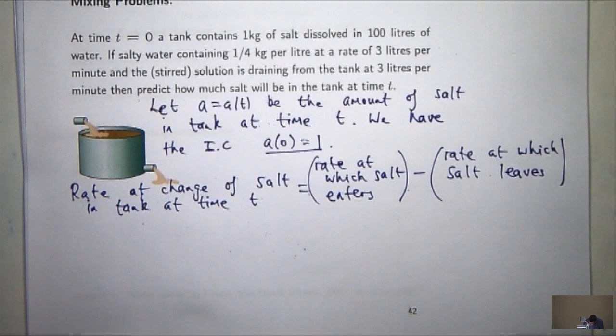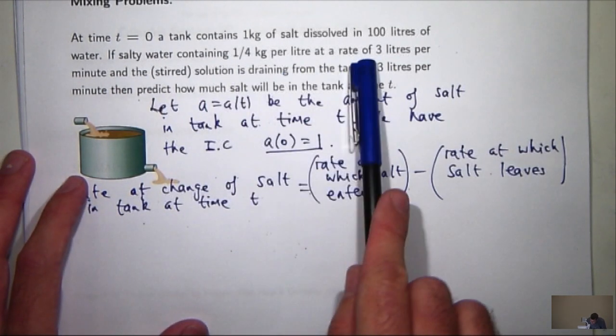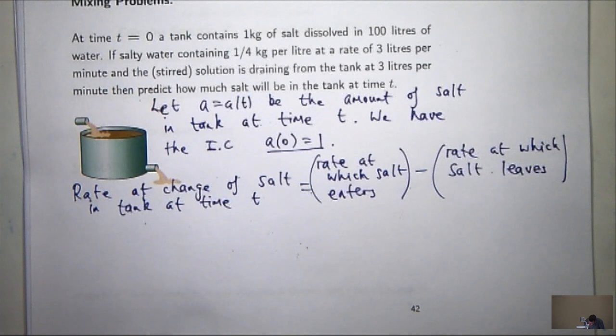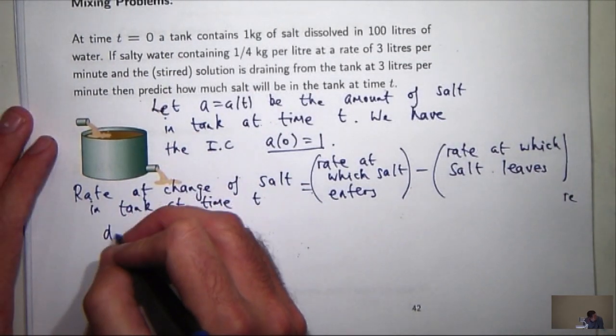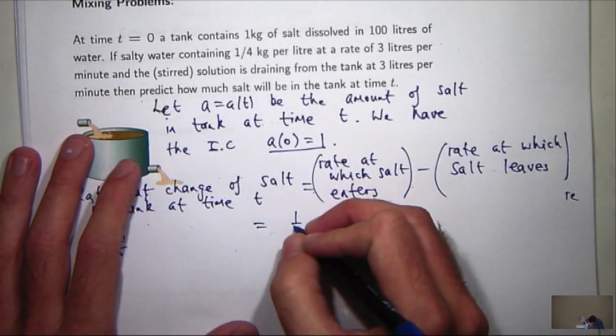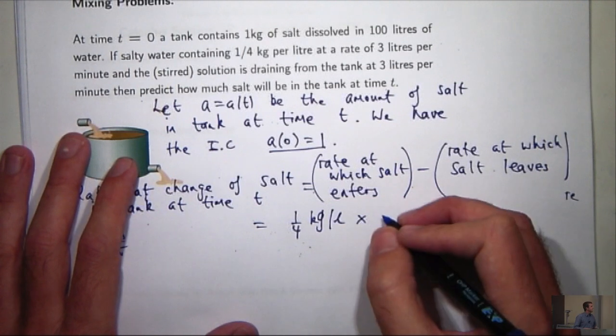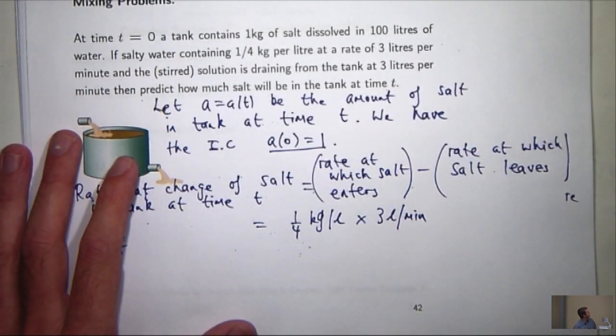So over here on the left-hand side, this is going to be something like dA/dt. And I just need to work out my two parts on the right-hand side. Now the rate at which salt enters is pretty simple. We've got three litres of liquid coming in and there's one quarter of a kilo per litre of salt. So the rate at which salt enters is just going to be 1/4 kilogram per litre times three litres per minute.